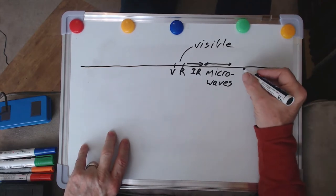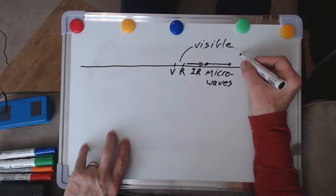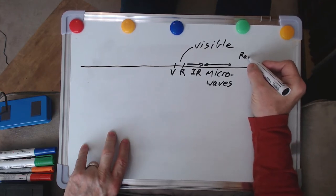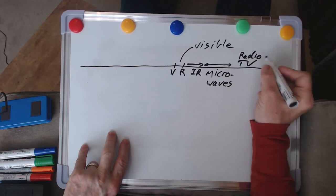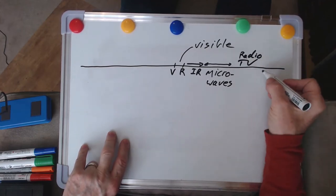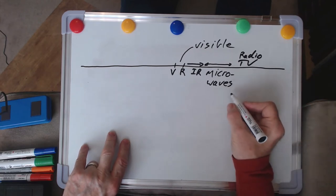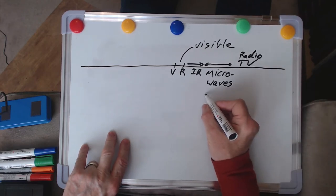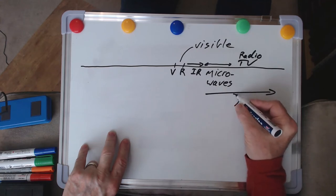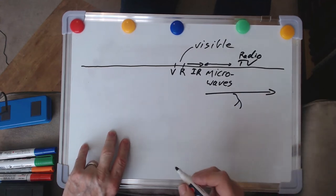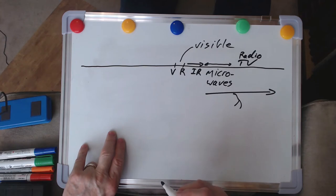And even further out, we get into the realms of radio and TV and so on, all of those signals, and they can go out a long way here in what I'm going to mostly refer to as wavelength, and that's a symbol for wavelength. It's the Greek letter lambda.